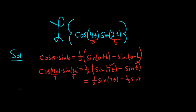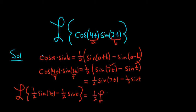Now we're ready to take the Laplace transform of one-half sine of 7t minus one-half sine of t. This equals—you can put the one-half in front, the Laplace is linear—one-half Laplace of sine of 7t minus one-half Laplace of sine of t.